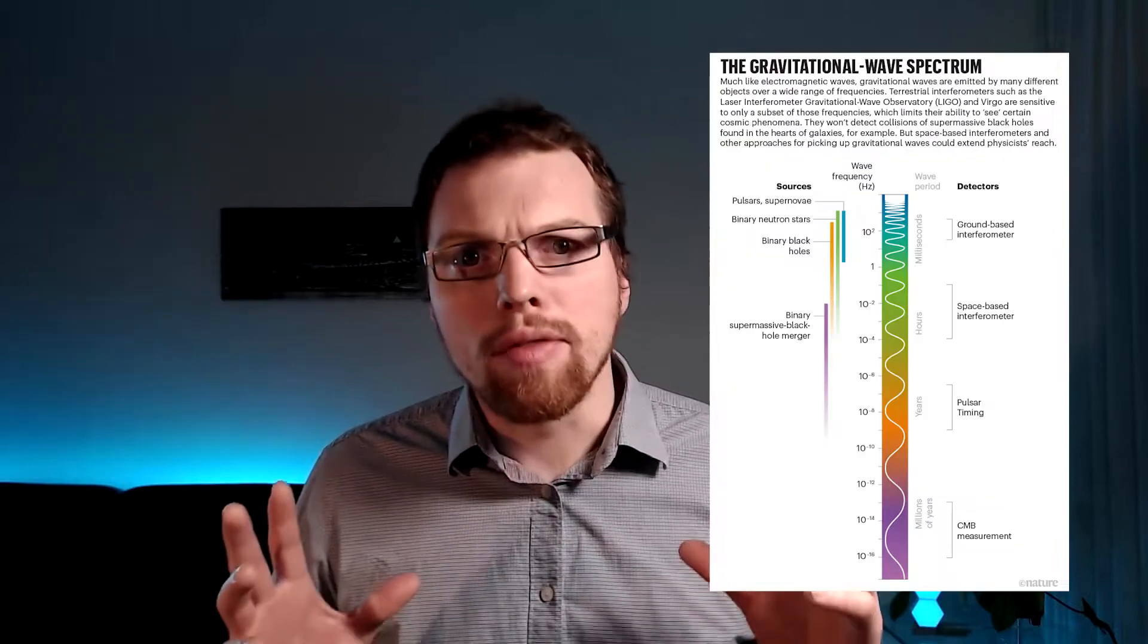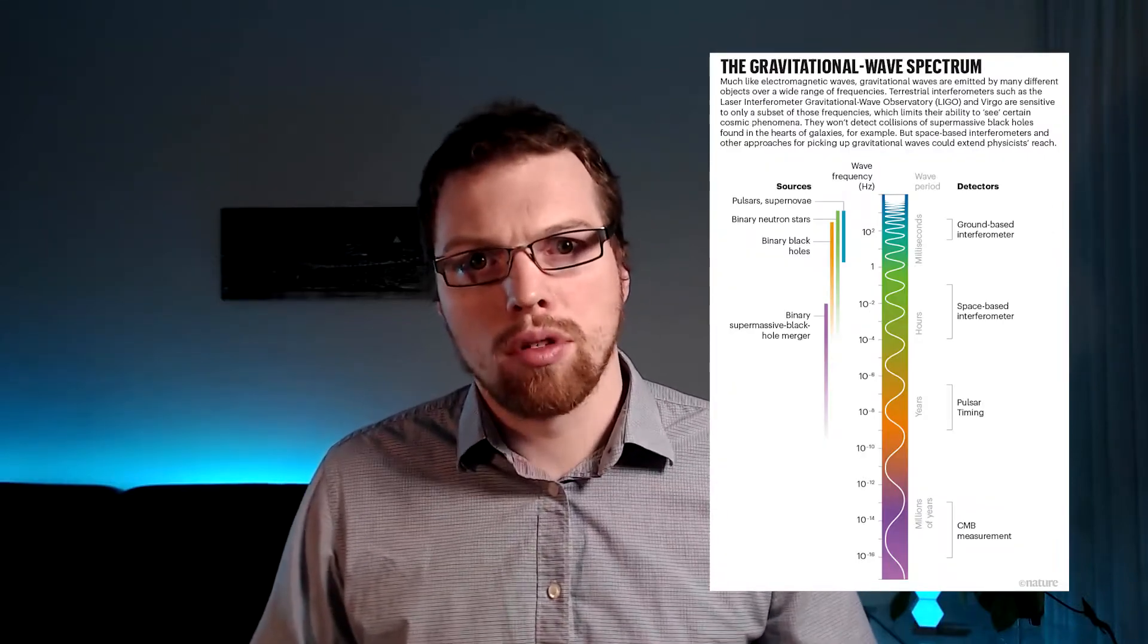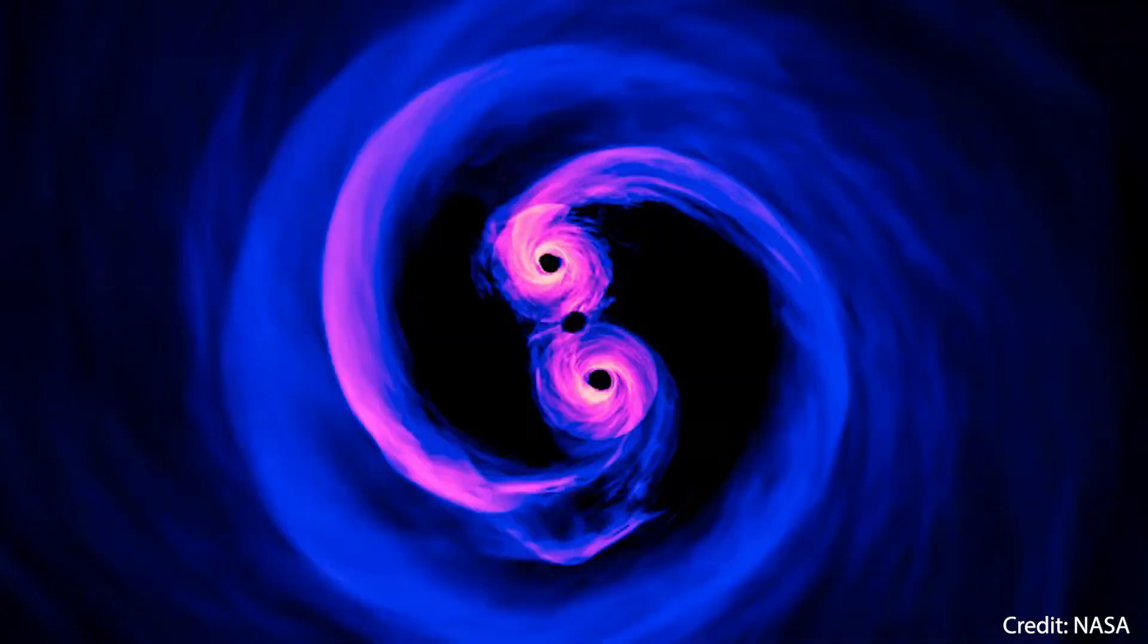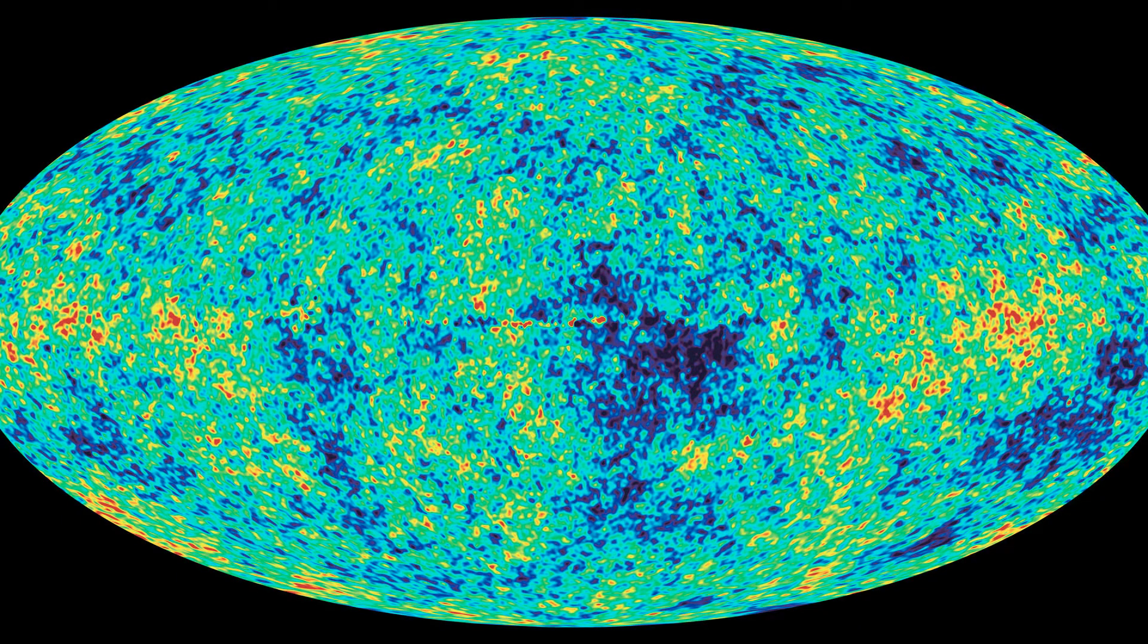Gravitational waves were first proposed by Henry Poincare in 1905, and then predicted by Albert Einstein in 1916 using his newly developed theory of general relativity. Now there are many different sources of gravitational waves, from supernova to rotating massive bodies to fluctuations from the beginning of the universe.